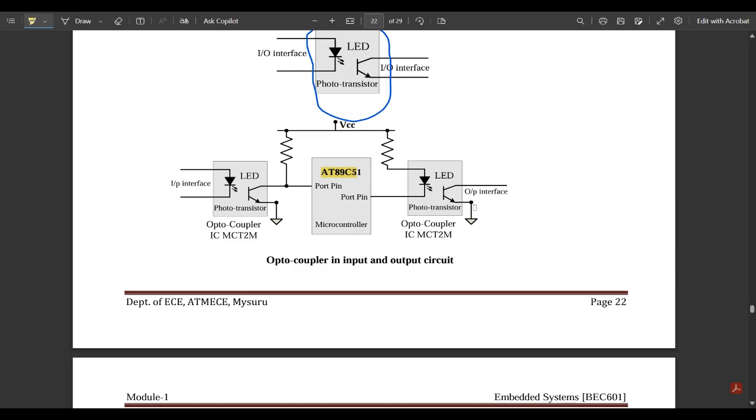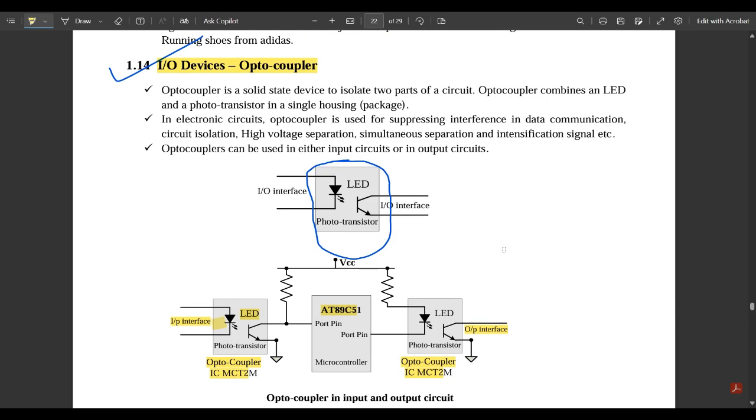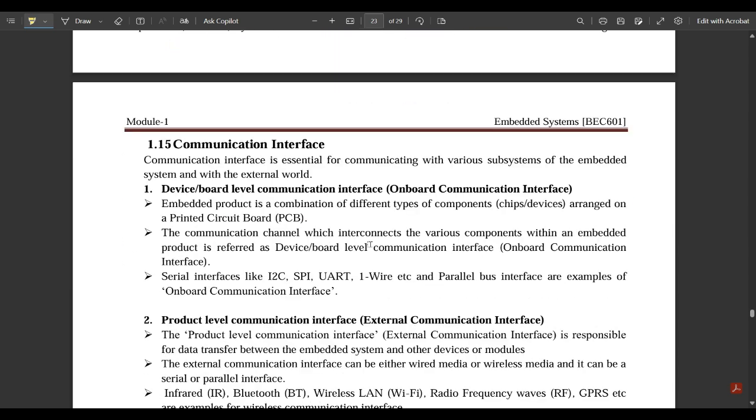At the output end it is given to the resistor and to the LED part. The output port pin is given to the negative end of the LED part and to the output of the photo transistor. These two are called optocouplers - the combination of LED as well as photo transistors as the input and output part for interfacing. Please make a note of this diagram and explanation.